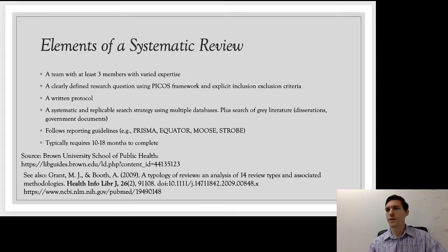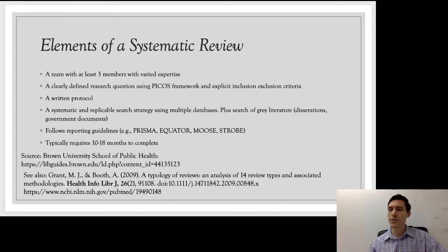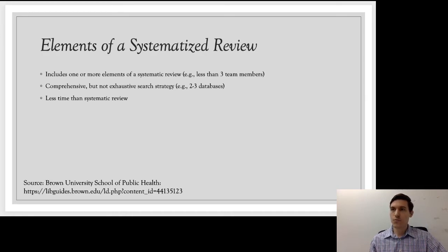Finally, a systematic review is going to normally take a long time — about a year, sometimes longer. Ten to eighteen months is what's shown here. These elements come from Brown University School of Public Health, and some ideas are also in an article published in 2009 — a typology of different types of reviews, not just systematic reviews. If your review does not meet all of those criteria, then it probably does not qualify as a systematic review.